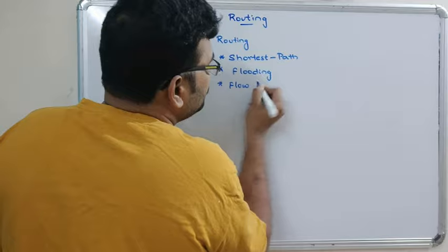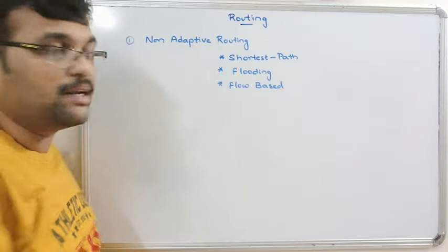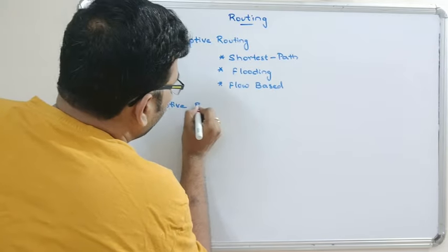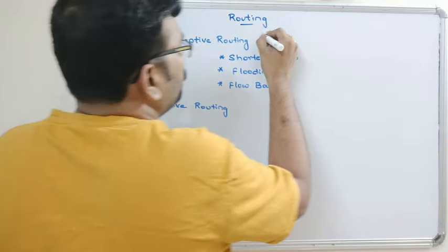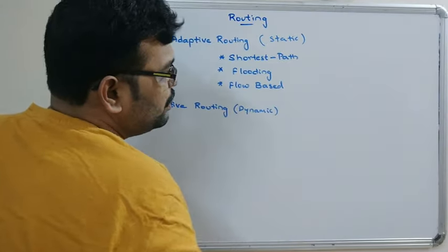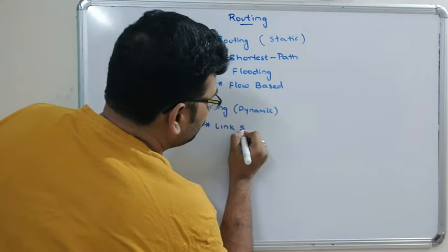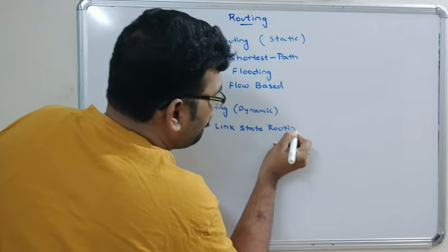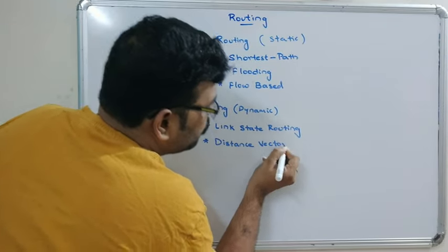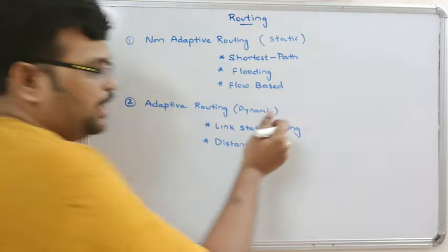Under non-adaptive routing algorithms, we will study three example algorithms: shortest path, flooding, and flow-based routing. Under the second category, adaptive routing — which we call dynamic — we will study link state routing and distance vector routing algorithms.